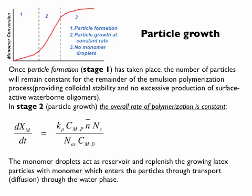The rate can only be constant if the monomer concentration inside the particle is constant and n-bar is constant — otherwise it could not be a straight line. Imagine a particle with a radical: it starts consuming monomer, so the monomer concentration drops. The particle doesn't like that, so monomer from the water phase enters the particle — it restocks monomer. The water phase doesn't like that, so monomer from the monomer droplet goes into the water phase. The net result is that particles grow and monomer droplets shrink, so throughout stage two the monomer concentration in the particle roughly stays constant.